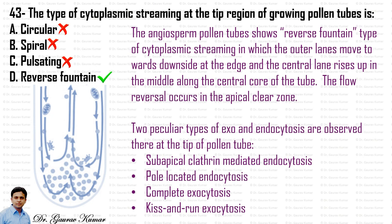Two peculiar types of endo- and exocytosis are observed at the tip of the pollen tube. There are two types of endocytosis: sub-apical clathrin-mediated endocytosis and pole-located endocytosis. And there are two types of exocytosis: complete exocytosis and kiss-and-run exocytosis. These two endocytoses and two exocytoses occur at the tip of the pollen tube, and the cytoplasmic streaming there is reverse fountain.